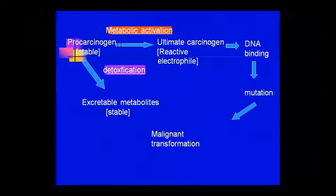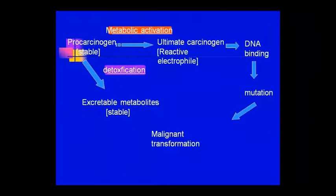This is the pro-carcinogen mechanism. Pro-carcinogens are stable agents that act through two pathways — they can become the ultimate carcinogen as a reactive electrophile. As a pro-carcinogen, they will bind to DNA, combine to cause mutation, and transform the normal cell into a malignant cell. Alternatively, the pro-carcinogen undergoes detoxification and is excreted out.